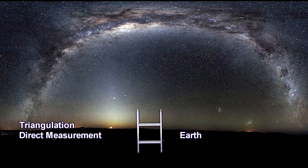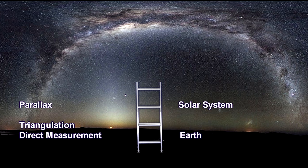In this segment, we built the second rung of our distance ladder: parallax. We can now use the diameter of the orbit of the Earth around the Sun as our baseline — 300 million kilometers, that's 186 million miles. Combined with the direct measurement and geometry from the first rung, we are set to measure distances to the stars.